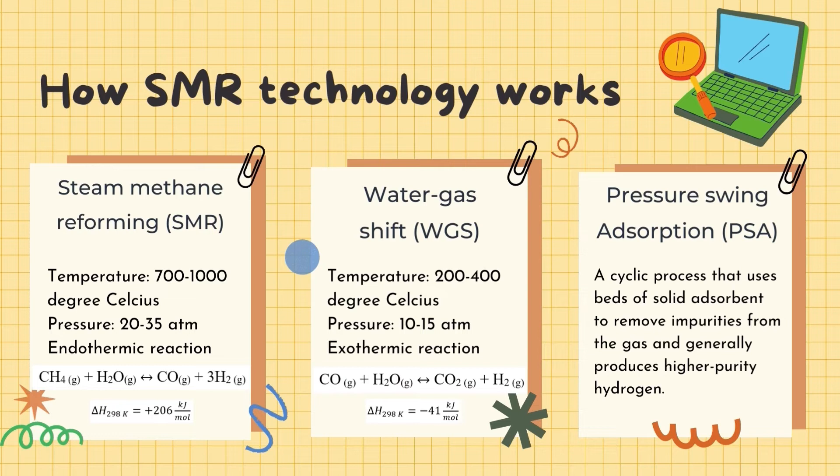For the third process, pressure swing adsorption, this process is vital in achieving higher purity gas, which in this case is hydrogen gas, as it is a cyclic process that uses batch of solid adsorbent to remove impurities from gas.